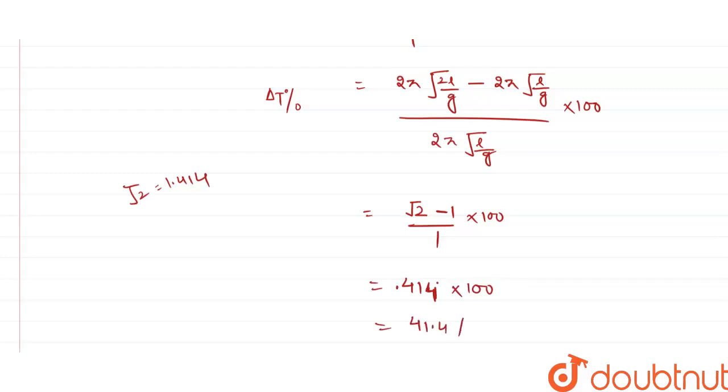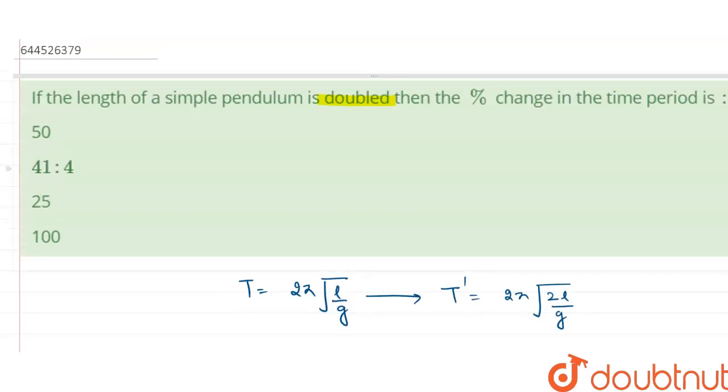This is the percentage change in time period if we double the length, 41.4 percent. So let's check the options. The second option which is 41.4 percentage is the correct option. Okay, thank you.